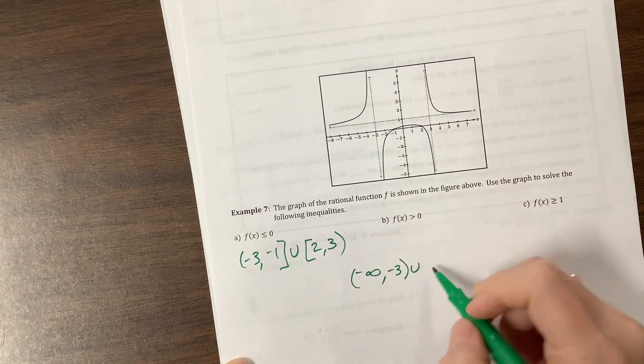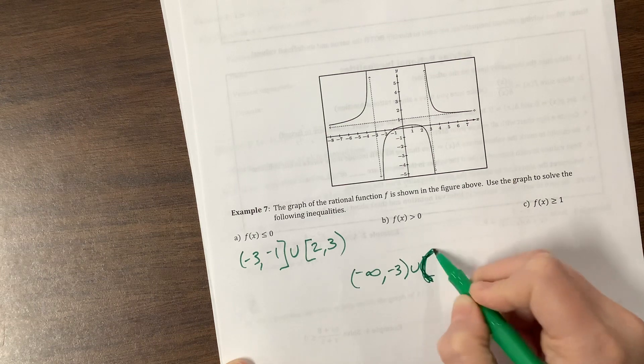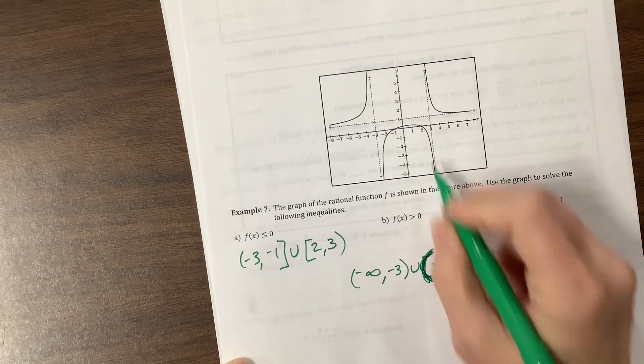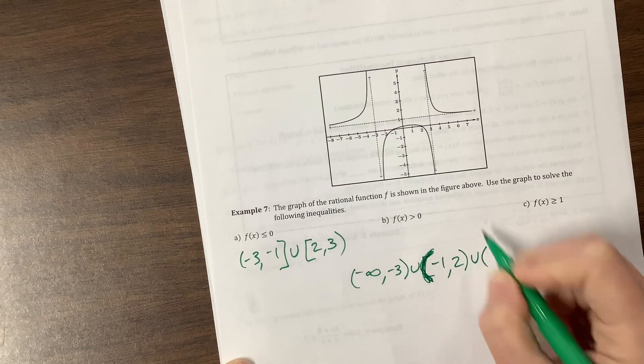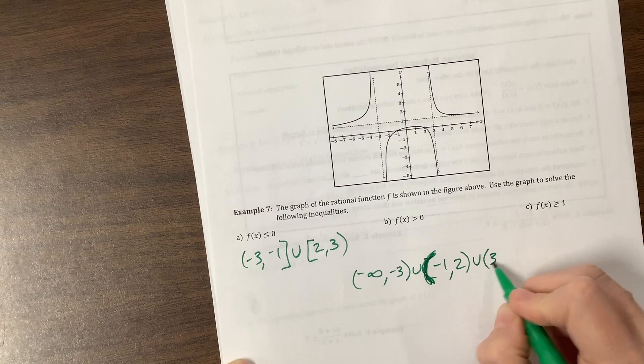Where are we greater than 0? So over here, I'm going to write it down here. Negative infinity, we're greater than 0 until the asymptote, so negative 3. And then we're greater than 0 from, oh, nope, we can't be equal. My bad, I was just testing you. So from negative 1 to positive 2, and then we pick it up again. And we're greater than 0 from 3 to infinity.